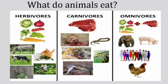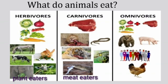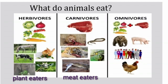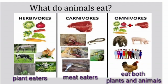What do animals eat? Animals can be classified into three broad categories based on what they eat. First, herbivores — animals which eat only plants — for example, cows, goats, deer, and giraffes. Second, carnivores — animals which eat only other animals — for example, lions, tigers, and vultures. Third, omnivores — animals which eat both plants as well as other animals — for example, human beings and bears.